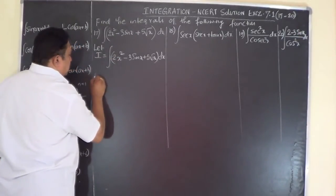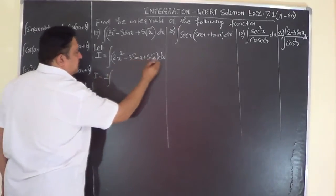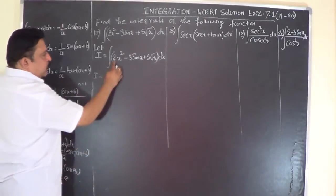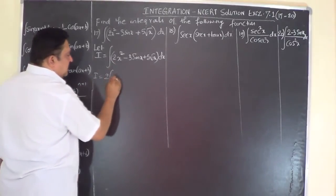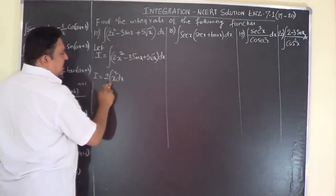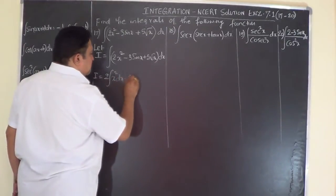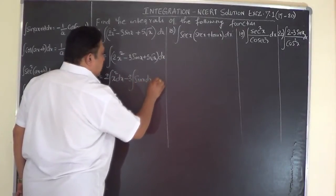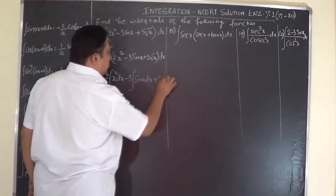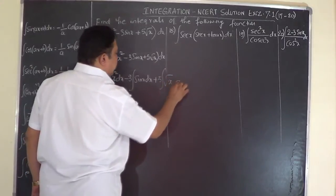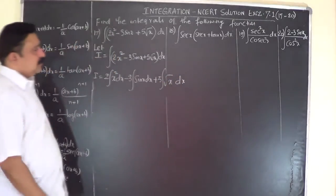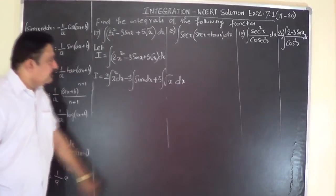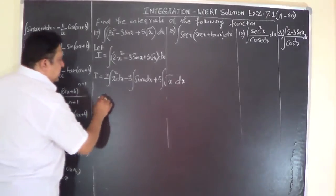Separate each term and when you separate, take the constants outside the integral sign. 2 is a constant, take it outside. This becomes 2 times integral of x squared dx, minus 3 times integral of sine x dx, plus 5 times integral of root x dx.